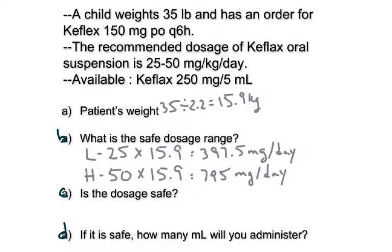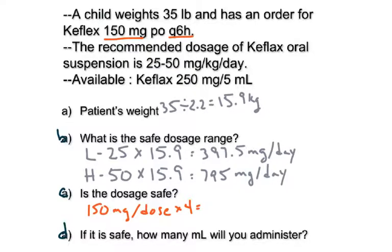Now find out if it's safe. He's getting 150 milligrams every 6 hours, which is 4 times a day. So 150 milligrams per dose times 4 equals 600 milligrams per day. All units say per day. His safe range is 397.5 to 795, and he's getting 600 — so yes, it is safe.